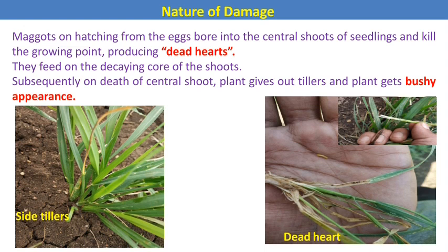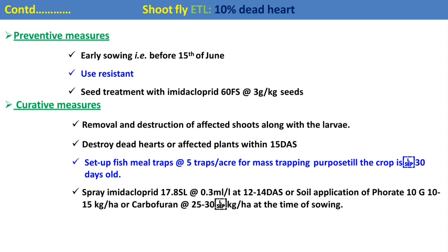For management practices of shoot fly in wheat, the ETL (Economic Threshold Level) is 10% dead heart. In preventive measures, early sowing is recommended to avoid infestation. Different resistant varieties can be used against shoot fly. Seed treatment with Imidacloprid at 3 grams per kg of seed before sowing also helps avoid infestation of shoot fly at an early stage of cultivation.